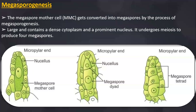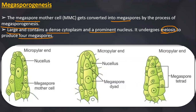Now let's discuss the process of megasporogenesis. The megaspore mother cell gets converted into megaspores by the process of megasporogenesis. It is a large cell with dense cytoplasm and a prominent nucleus. It undergoes meiosis to form 4 haploid megaspores — the megaspore tetrad. Inside the nucellus, one cell gets enlarged to form the megaspore mother cell, which undergoes meiosis to form 4 haploid cells.